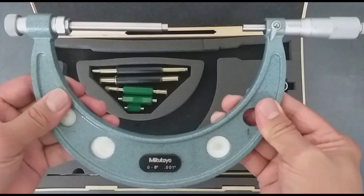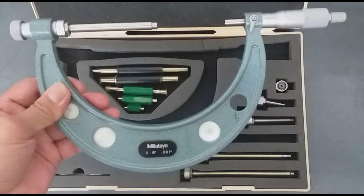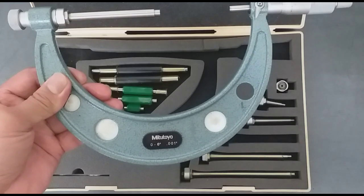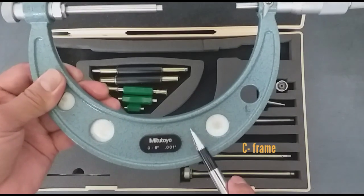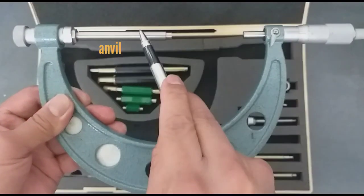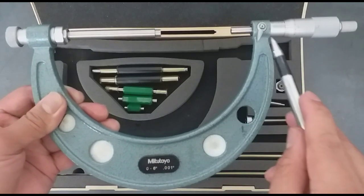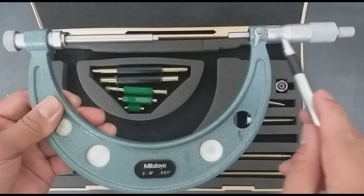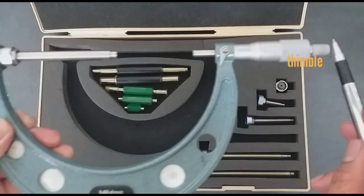This is a micrometer, one of the precision measuring instruments. This is the C-frame, this is the anvil, this is the spindle, this is the lock, this is the thimble, and this is the ratchet.